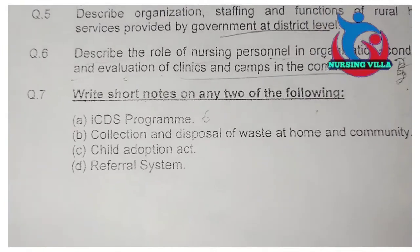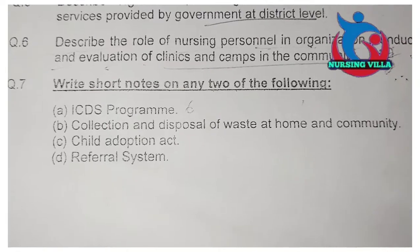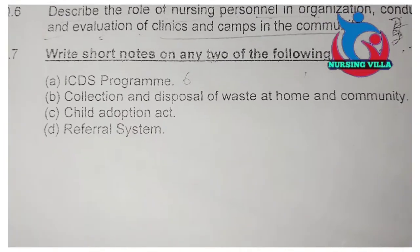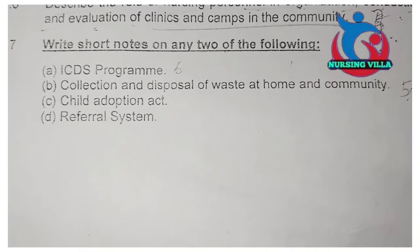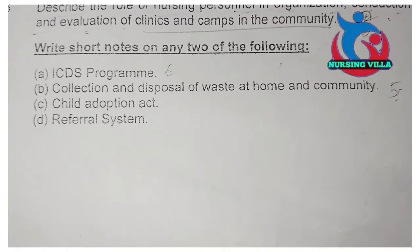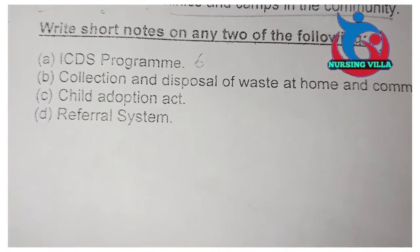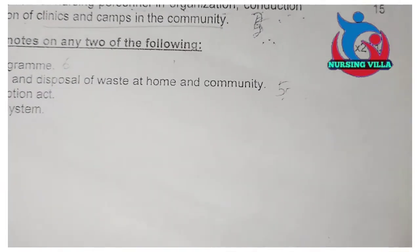Then we turn to question number 7: write short notes on any two of the following. They give four questions but we attempt only two. Question A: ICDS program. Question B: collection and disposal of waste at home and community. Question C: Child Adoption Act. Question D: referral system. Each question carries 7.5 marks, and we attempt only 2, making it 15 marks total.